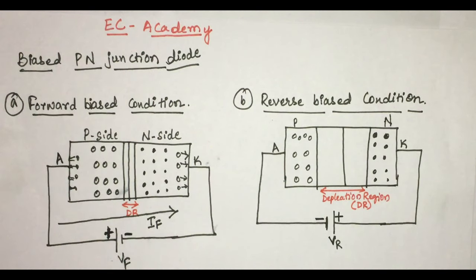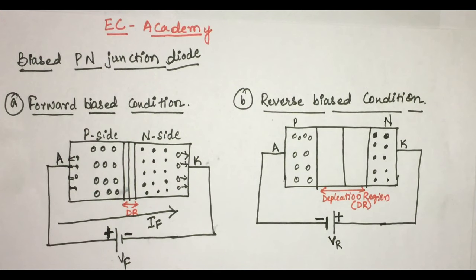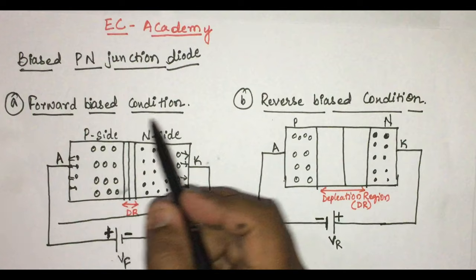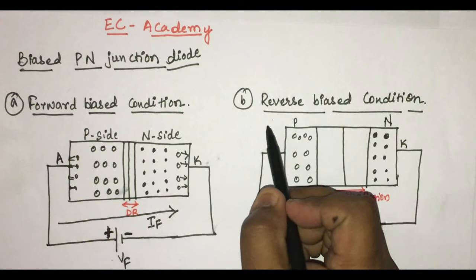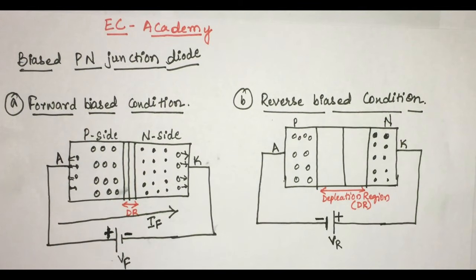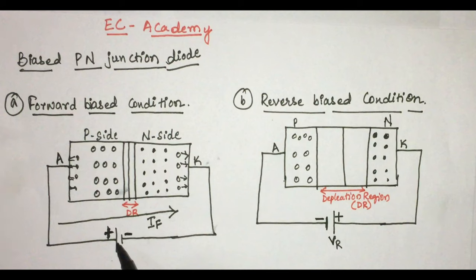Depending upon the polarities of the external voltage connected to a p-n junction diode, biasing is classified into two types. The first one is forward biasing and the second type is reverse biasing.